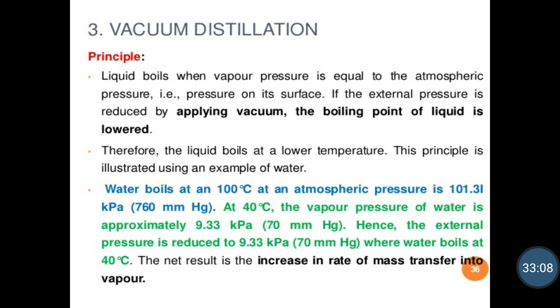So we can reduce the boiling point by using a vacuum. When atmospheric pressure is reduced, the liquid boils at a lower temperature. We can apply this principle to distill heat-sensitive materials at lower temperatures.